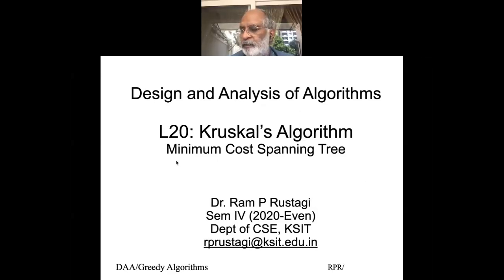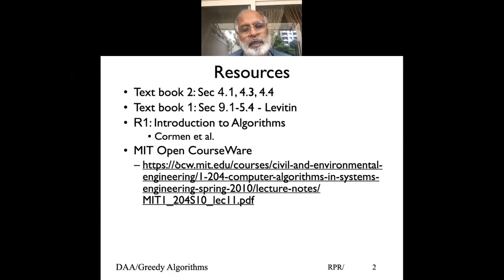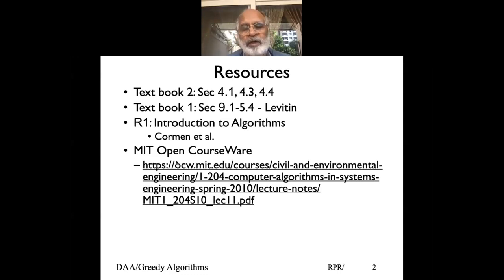The algorithm was to, given a graph, build a minimum cost spanning tree, given the resources from the books as well as other places. Of course, you can Google it and find many explanations. The suggestion would be to take different examples, work out the problem, and make sure that you understand what the Prim's algorithm is.